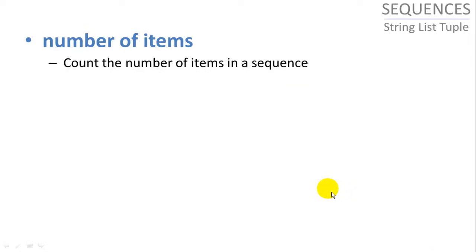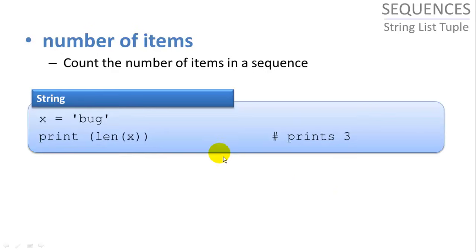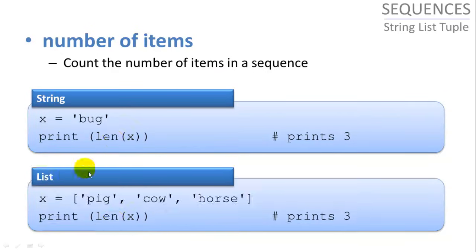Number of items, we'll count the number of items in a sequence. And we do that using the len function, which is short for length. And we can do the same thing in a list. It prints the length of a list, three items in this list.